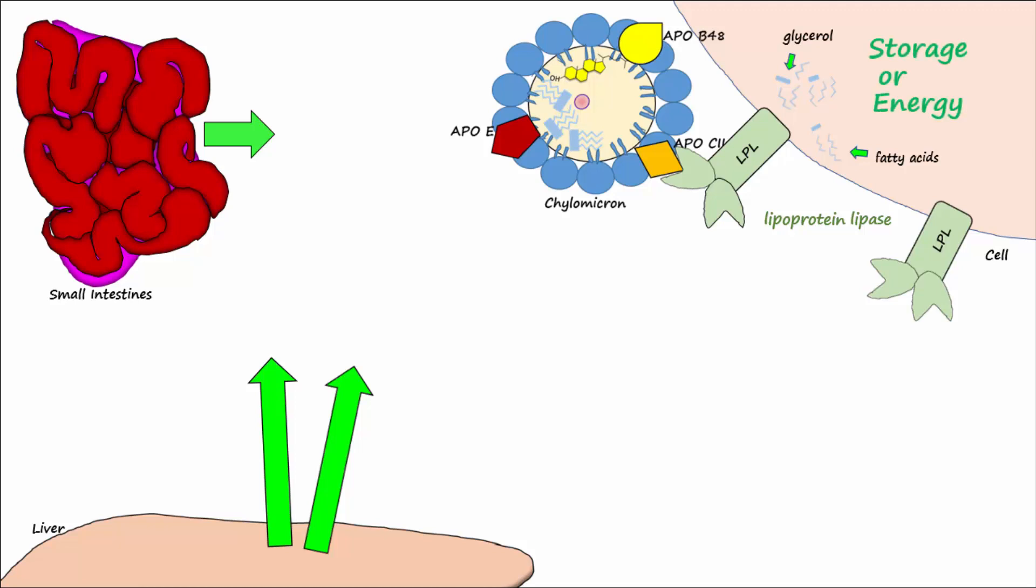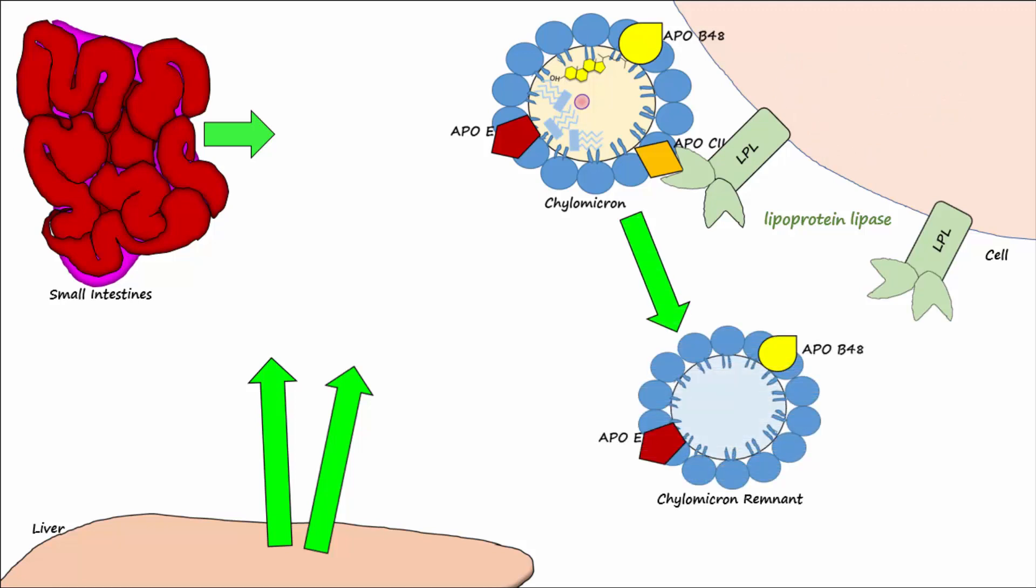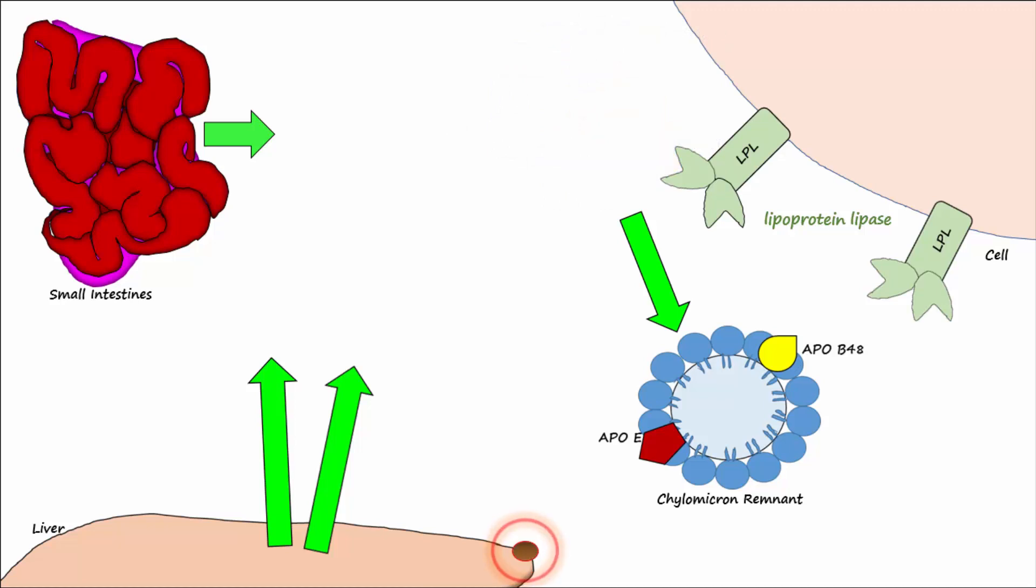After removal of triglycerides, the chylomicron becomes a chylomicron remnant. Hepatocytes contain scavenger receptors designed to attach to ApoE. ApoE on the chylomicron remnant binds to the scavenger receptor on the liver and allows the chylomicron remnant to return to the liver.